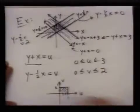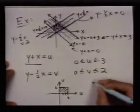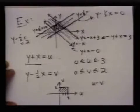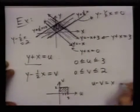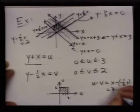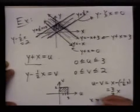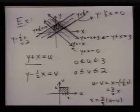So to do that you have to do some solving. Let's see, if I take u minus v, I get x minus negative 1 half x, which is 3 halves x. So x is 2 thirds u minus v.